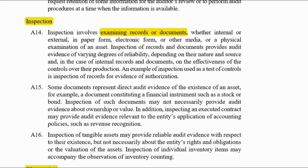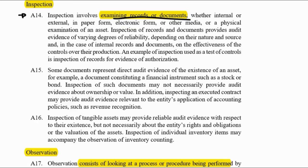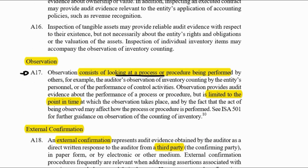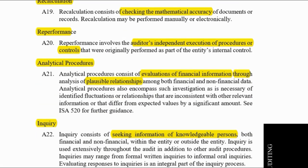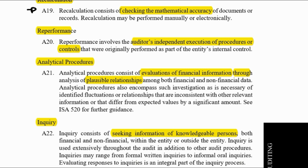At A14 they've taken each of those verbs about how I can go and get evidence and explained them in a little more detail. For inspection, you can go and examine records or documents — it's a little bit more in-depth looking, as opposed to observation, which would be looking at a process or procedure without going into detail in a document. External confirmations means getting a confirmation from a third party. Recalculating covers any mathematical accuracy.